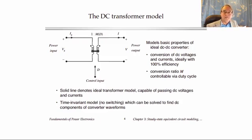So again, the DC transformer model is justified because it models the important physical properties of the desired waveforms of the DC-DC converter, which is conversion of the voltages and currents according to a conversion ratio M with 100% efficiency. And this is now a time-invariant model that doesn't have switching.